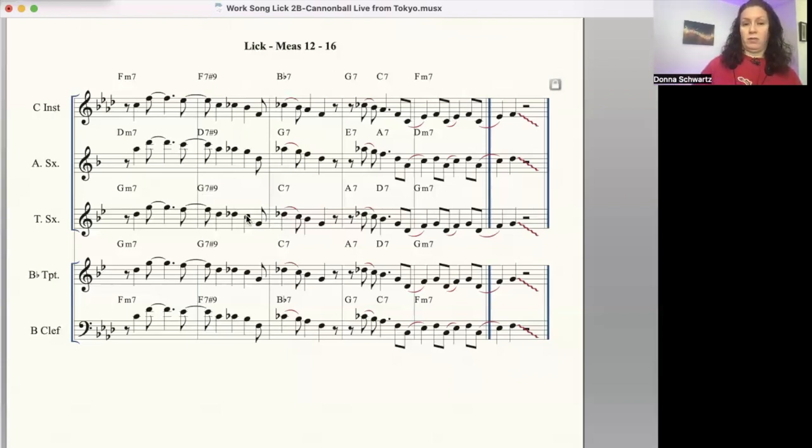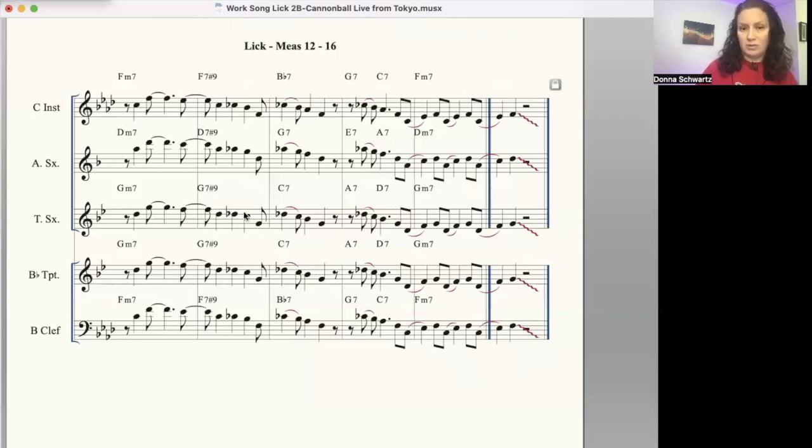And then we've got the 4th, oh, that's taboo, we don't want that during a dominant 7th chord, but he makes it work, and that's the key, no pun intended. Then we've got the 1 over here. So we have some chord tones and some really dissonant tones over here, and that's great, because that brings out some tension.